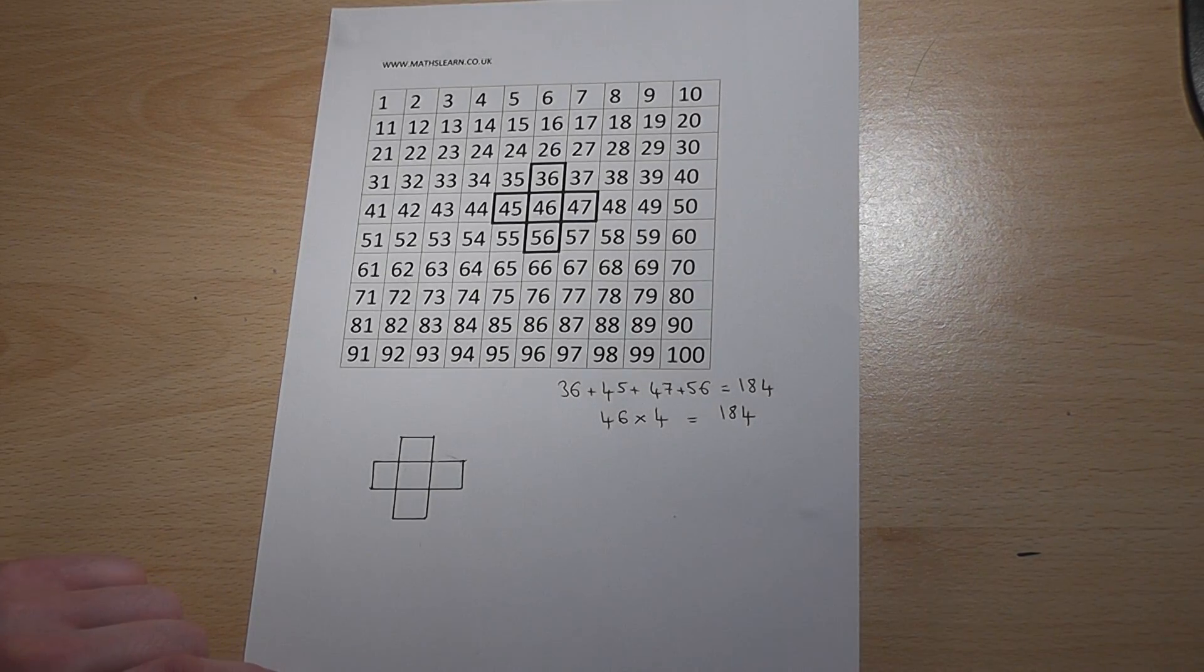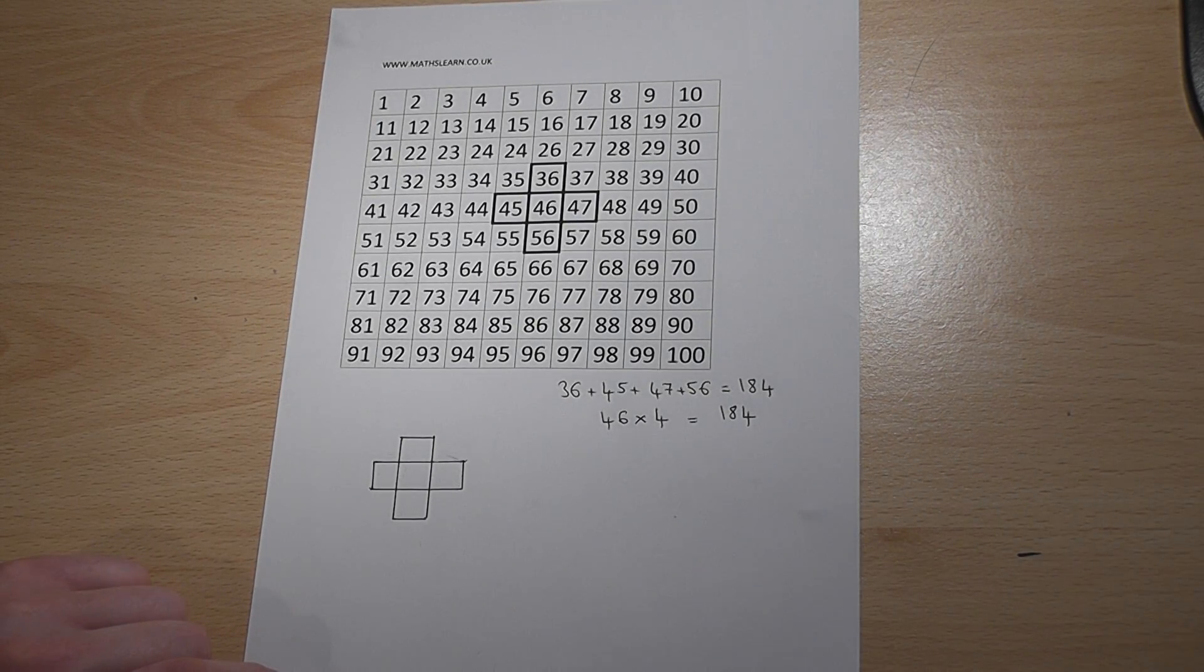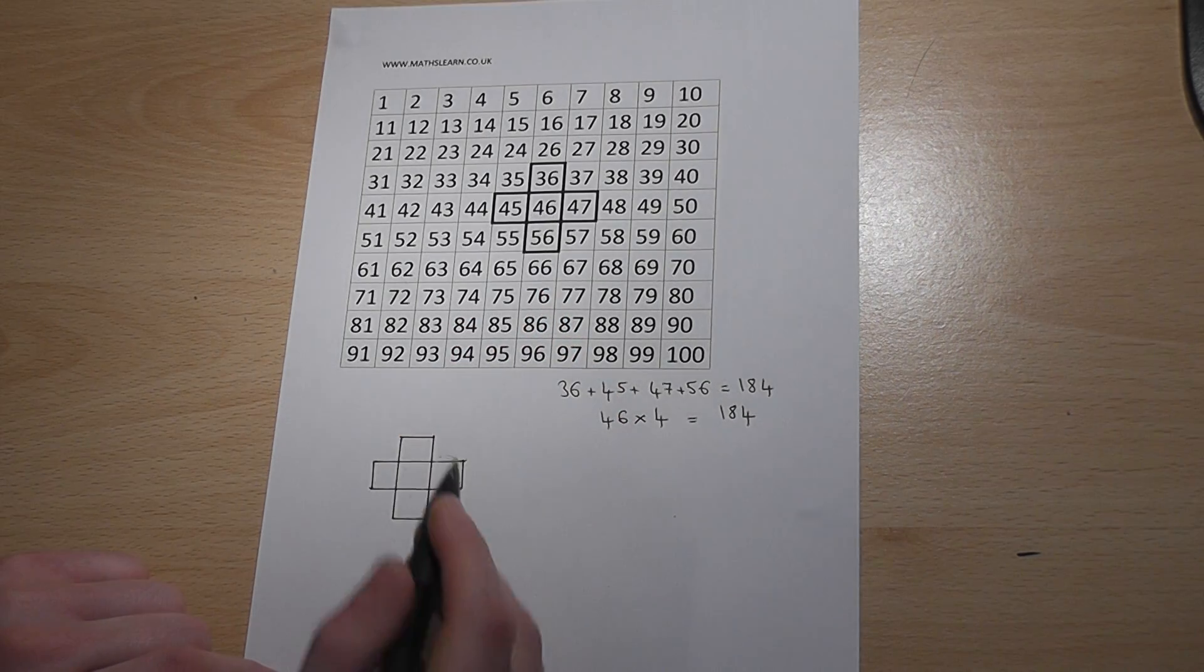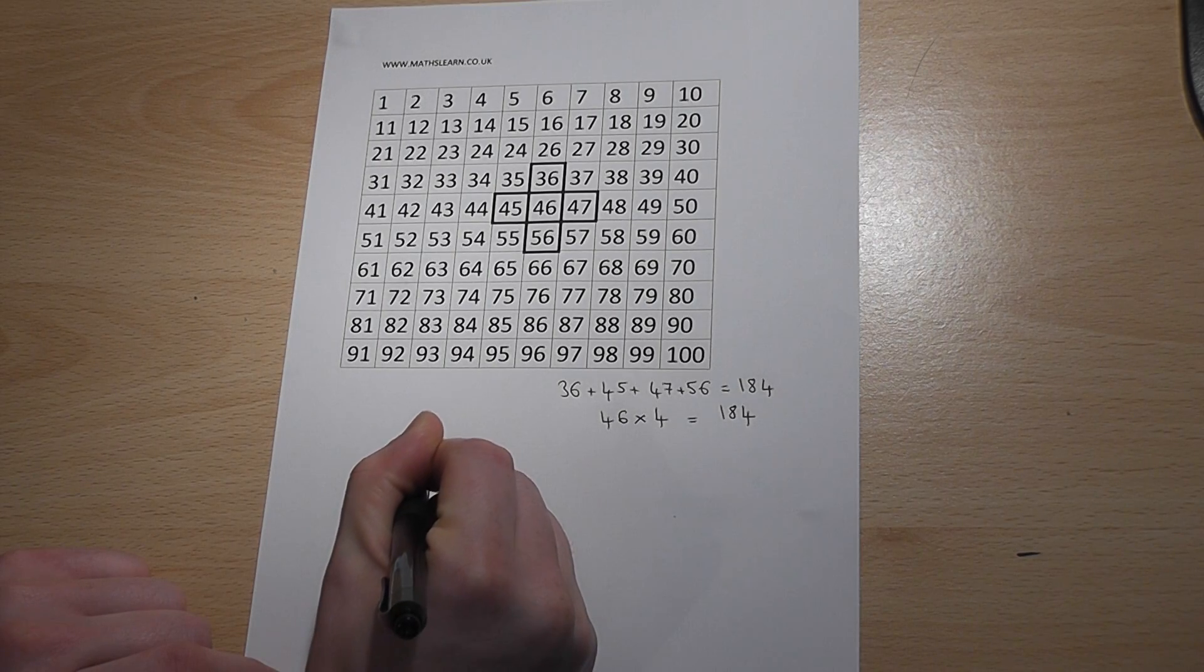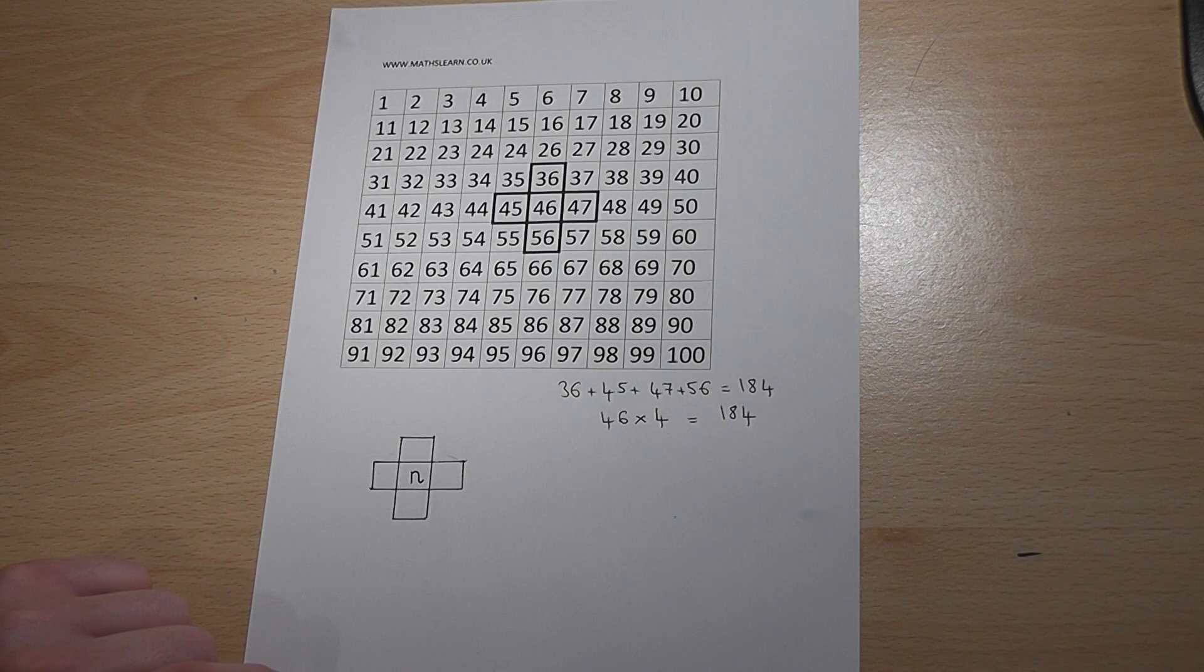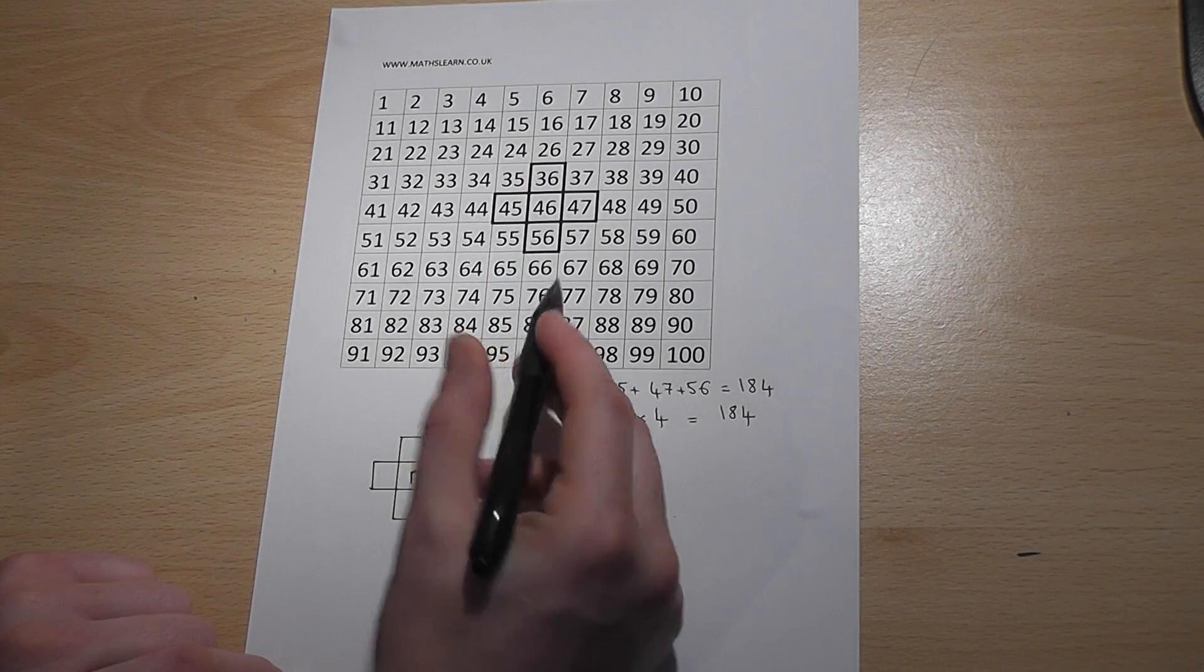Now we can prove this by doing a bit of algebra. If we call the number in the middle n, that's a general number that could be 46, 76, 43...